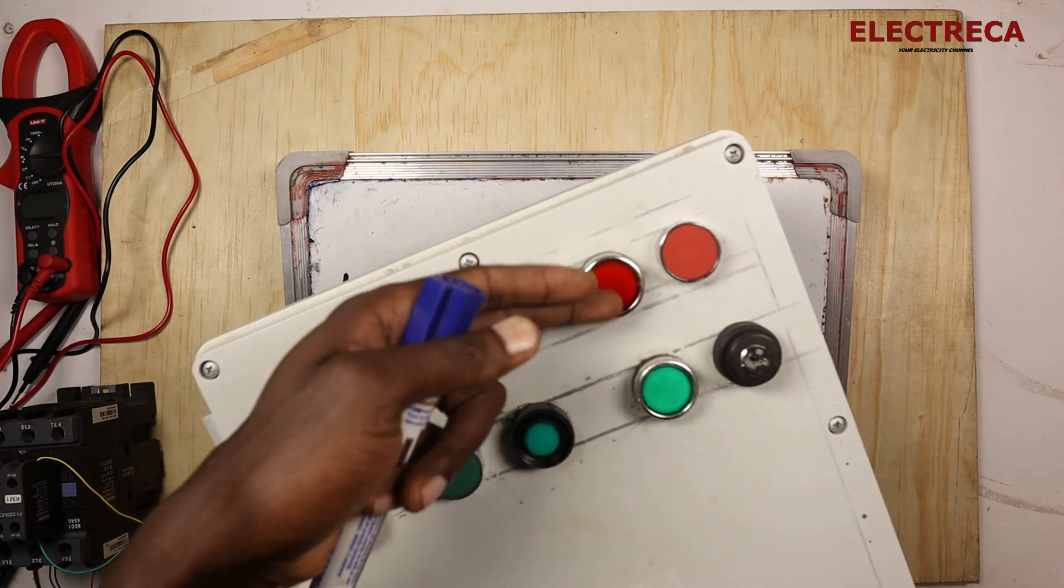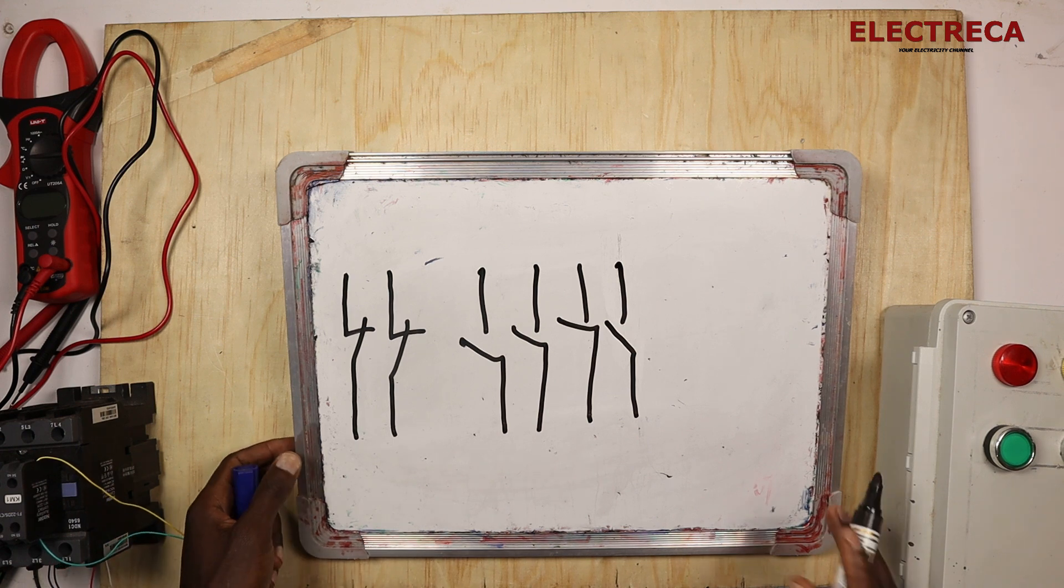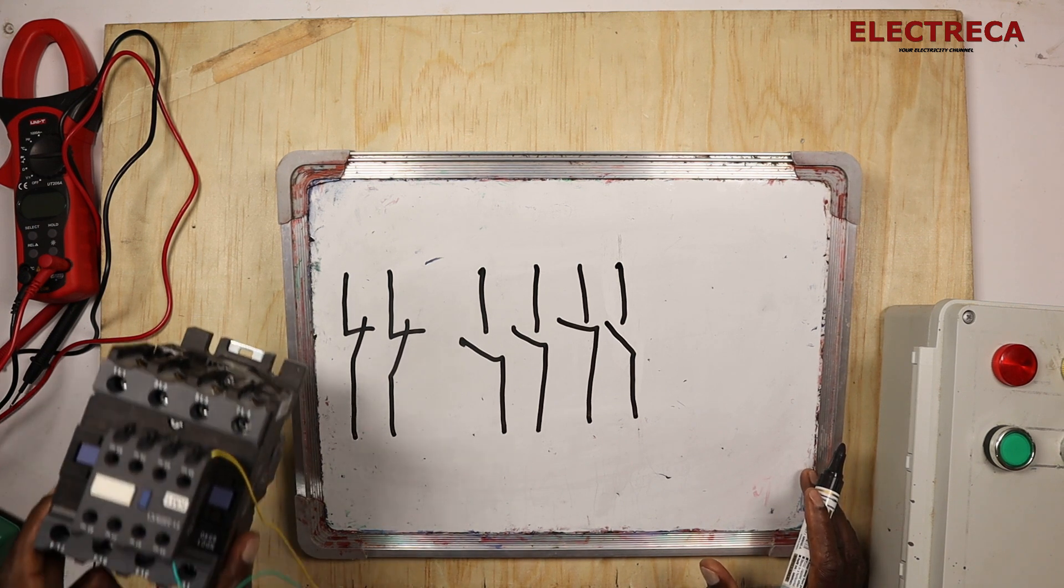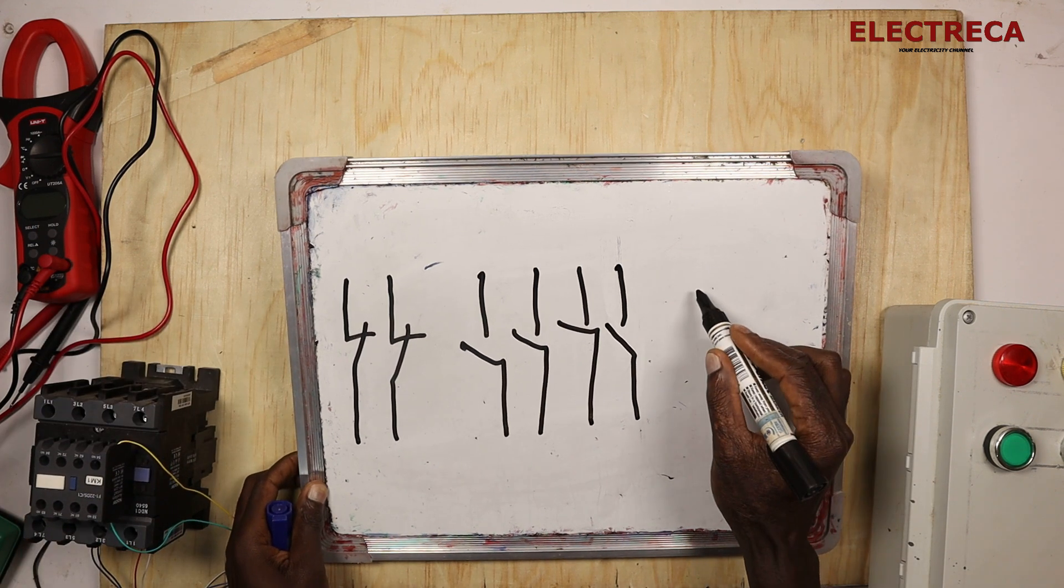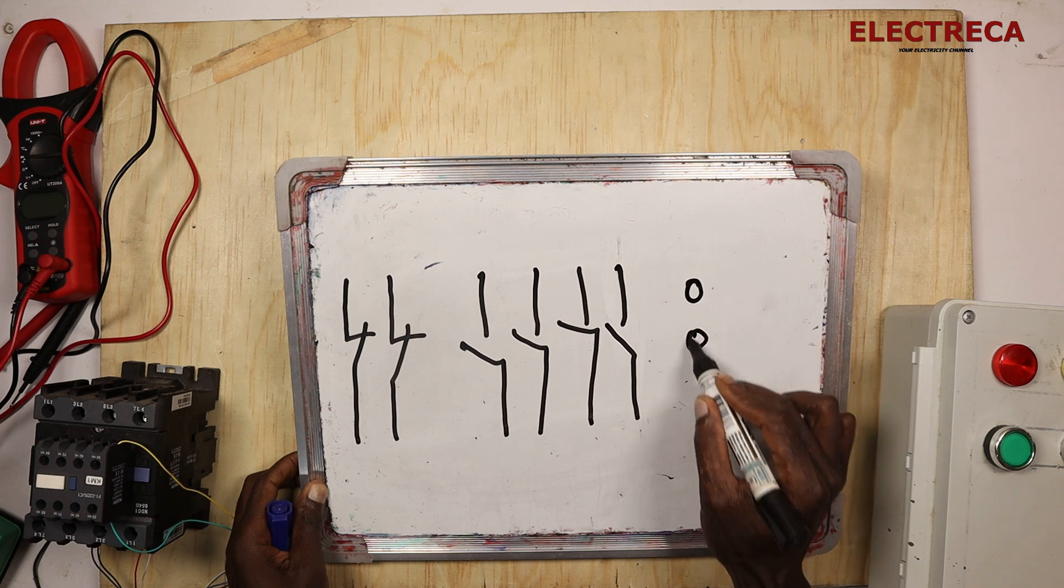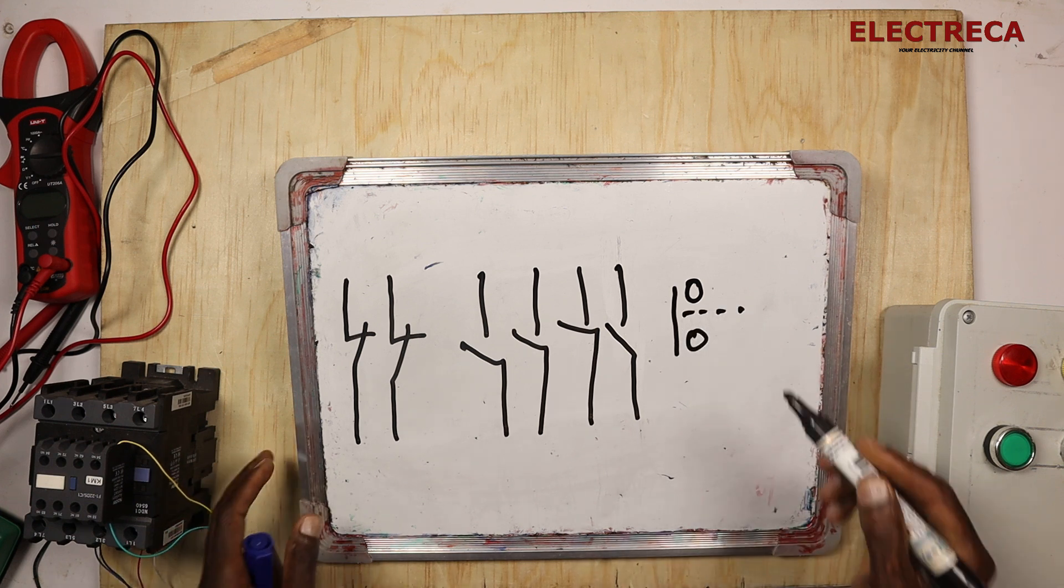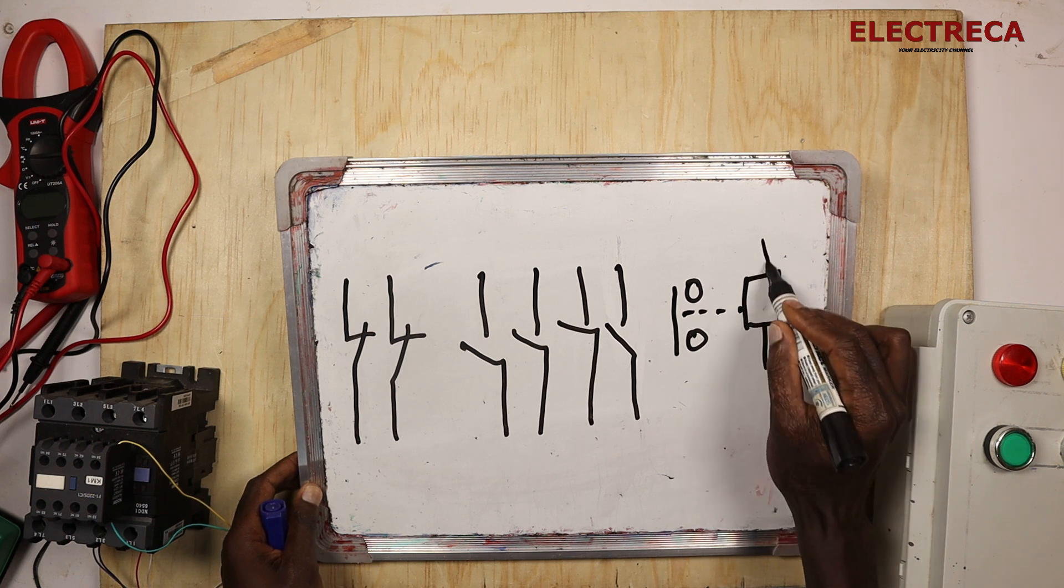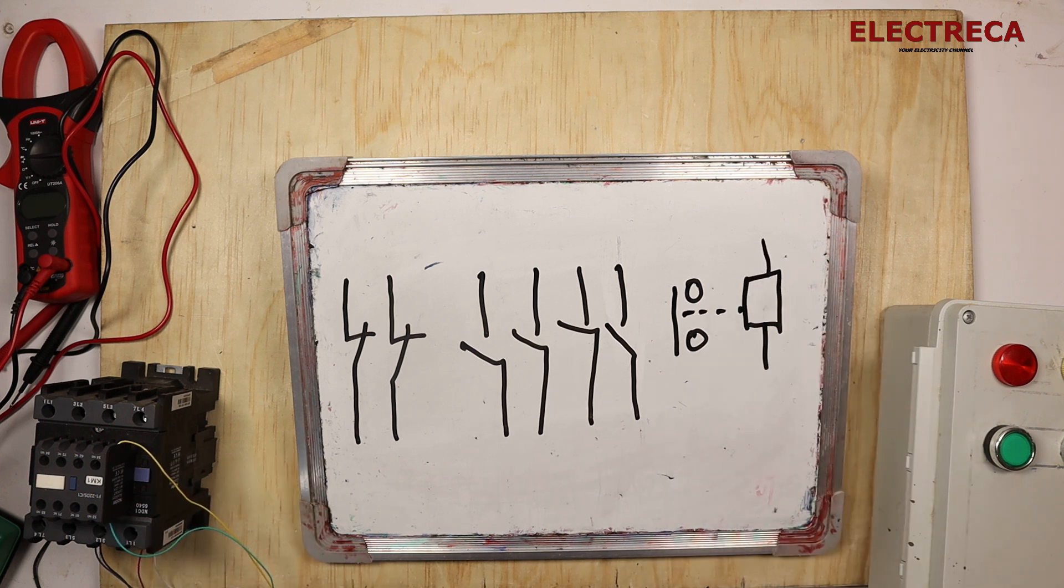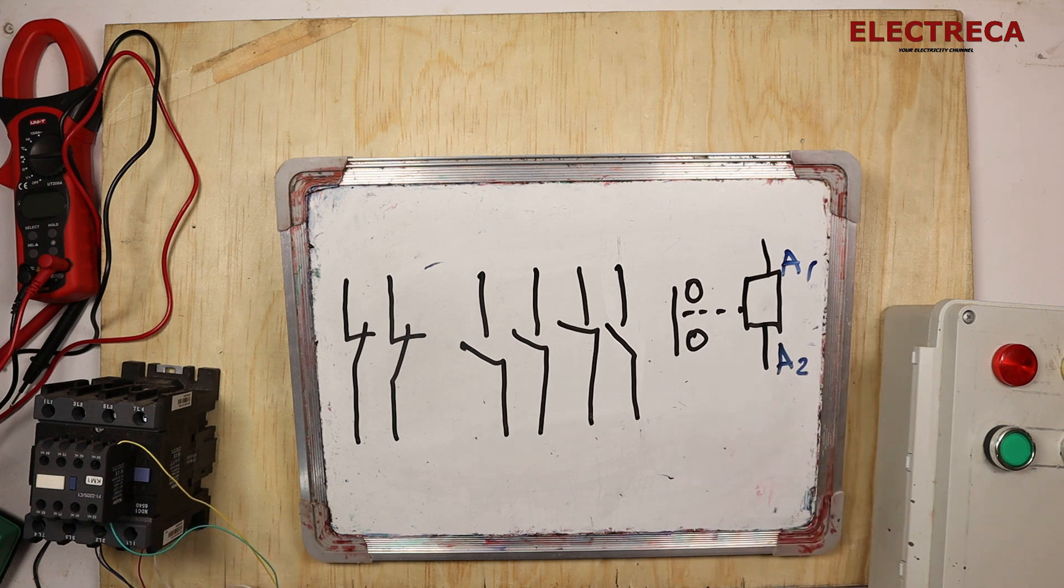So let us draw our contactor coil. We can draw our contactor coil first, we can have our normally open contacts which supposed to give us the holding position and we can have our coil here. So this coil, this here we can have A2 and this is A1.